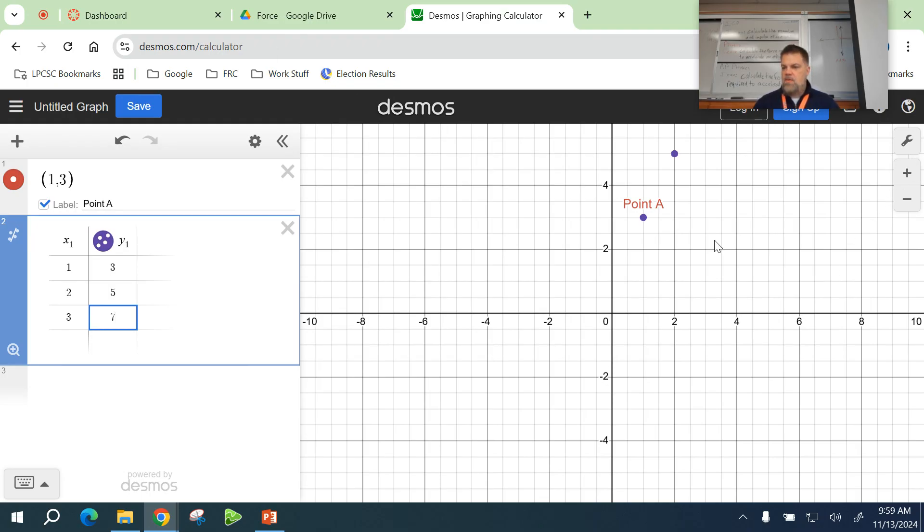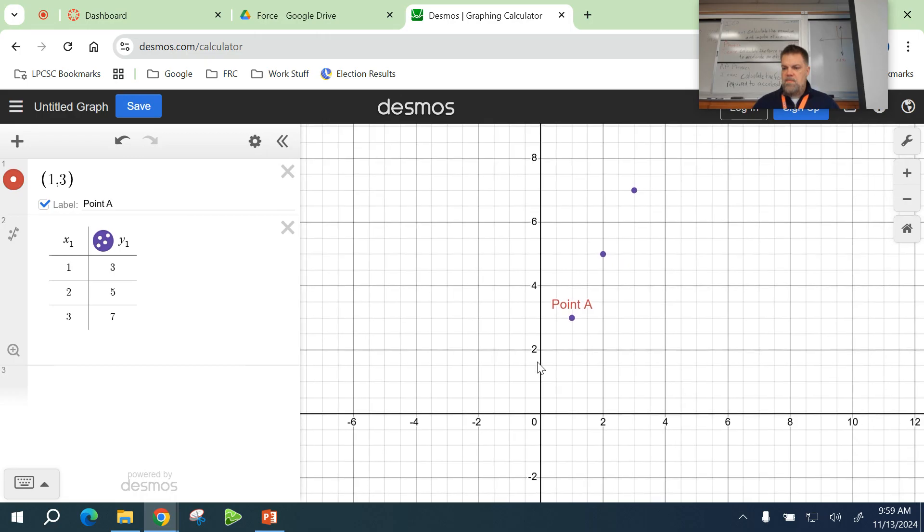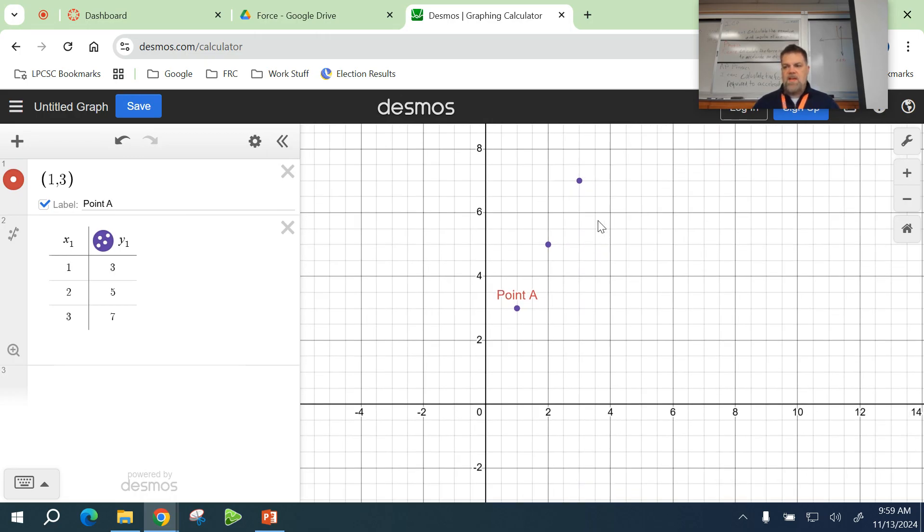And so that's the easiest way to plot points. If you do it this way, you can label it. You can turn the label on and off. But if you have multiple points...